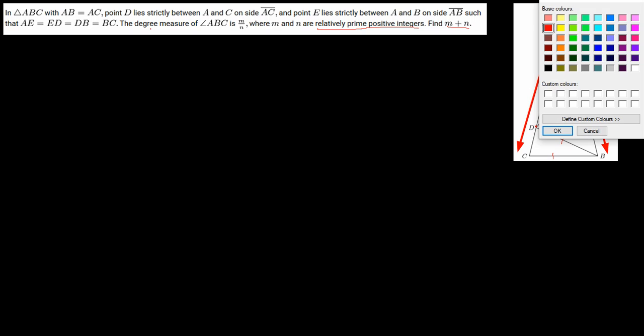So as you can see in triangle ADE, here AE is equal to DE. So we can actually conclude that this is an isosceles triangle since both sides are equal, so this angle will be equal to this angle. Similarly in triangle DEB, again DE and DB are equal, so this angle will be equal to this particular angle.